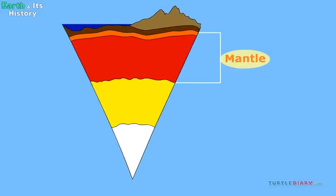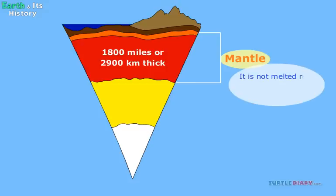The mantle makes up most of the Earth. It is about 1,800 miles or 2,900 kilometers thick. It is made of hot rock. It is not melted rock, but it is not really solid either. It can move.